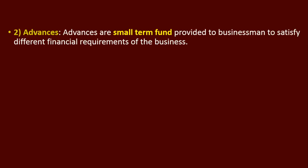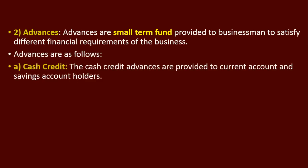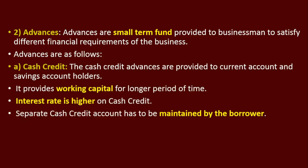Under advances, advances are short-term funds provided to businessmen to satisfy different financial requirements. Under advances, the first type is cash credit. It is provided to current account holders and savings account holders to provide working capital. The interest rate on cash credit is higher, and a separate cash credit account is maintained by the borrower.